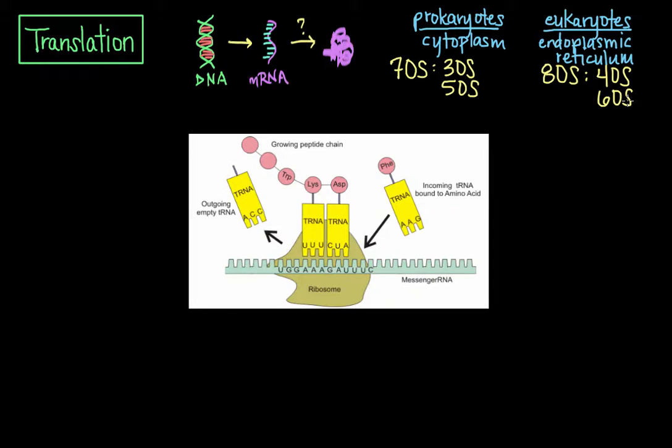Now, the unit of measurement for ribosomes is the Svedberg unit. That's what the S stands for, which is a measure of the rate of sedimentation in centrifugation rather than size. And so this accounts for why the fragment names here don't really add up to what the total ribosome is.